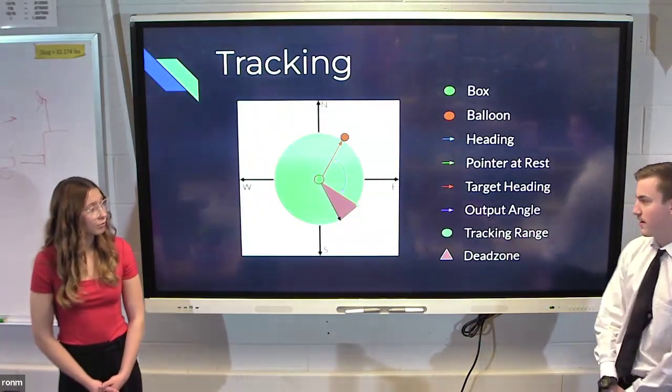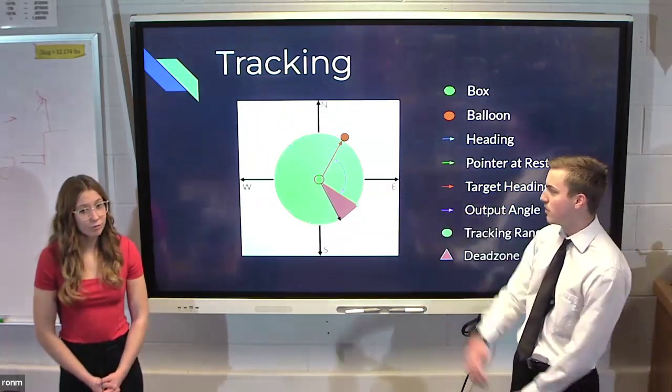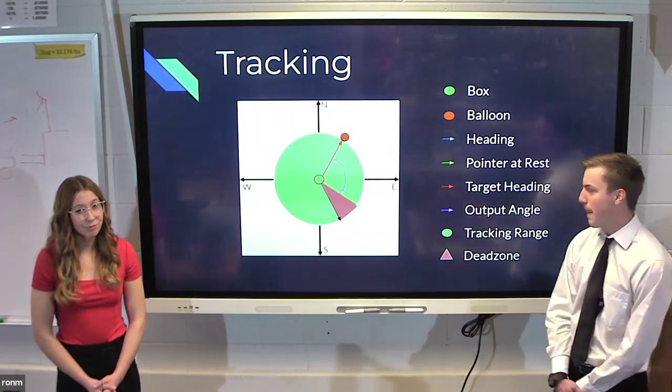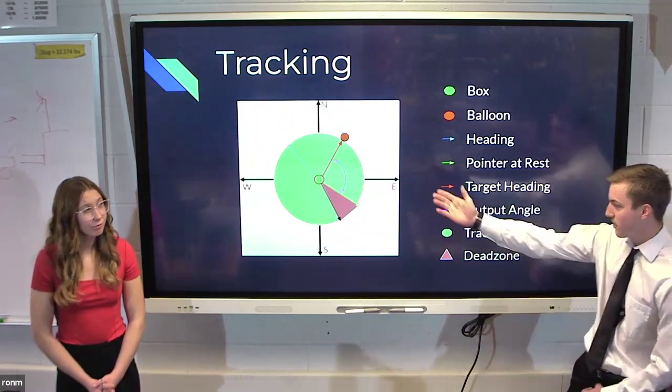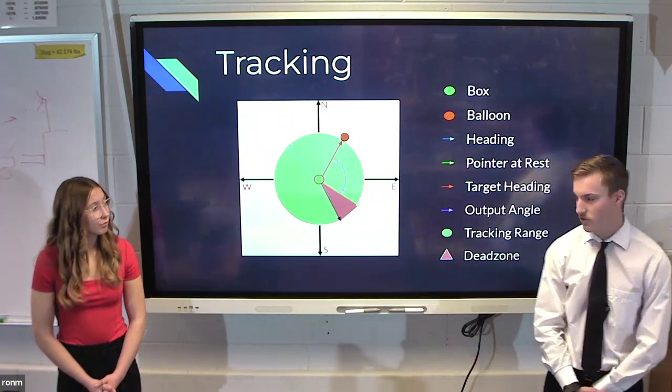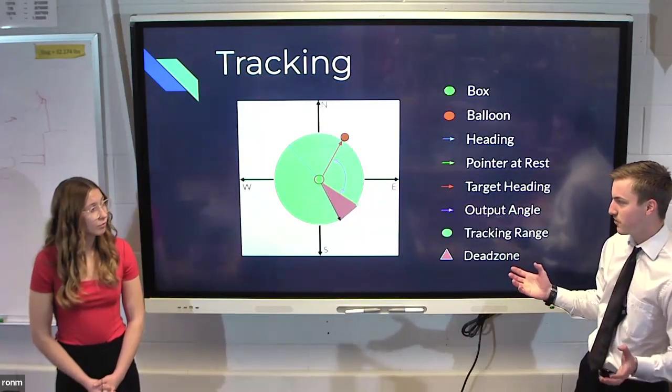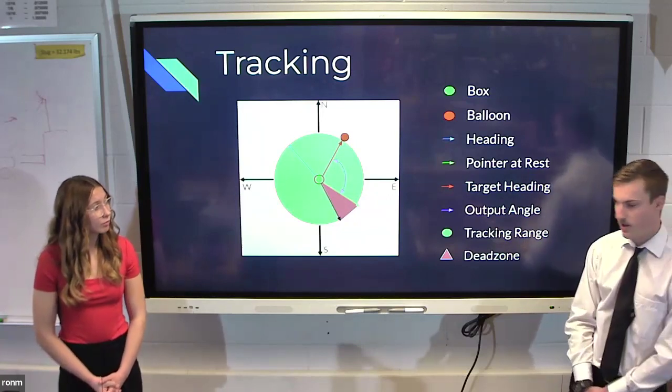This is how our tracking works. We got the red arrow is the target heading, which is where we want our pointer to point at. The heading is information we get from our nine-axis sensor and the output angle we get from the difference of the target heading and the heading.